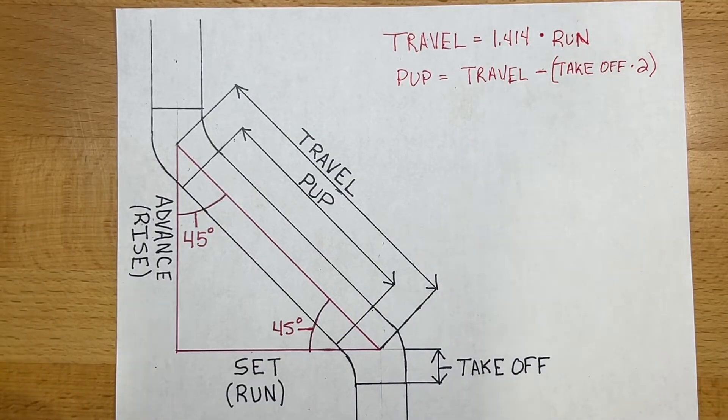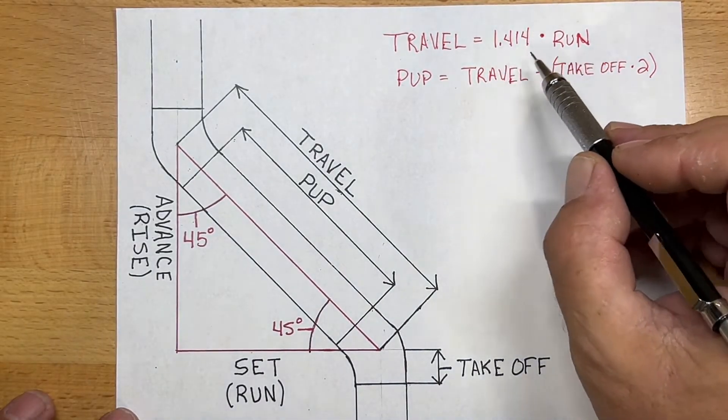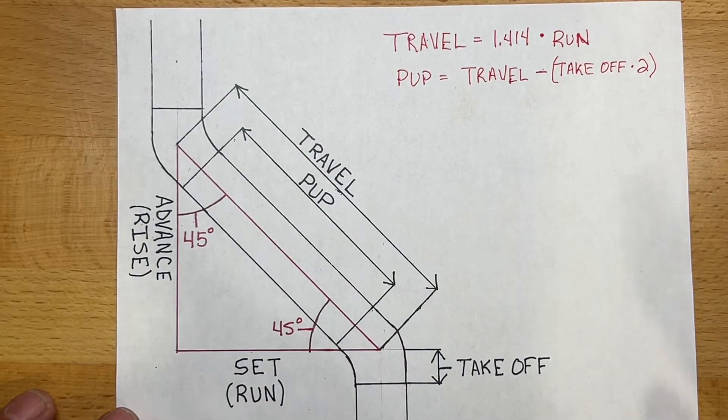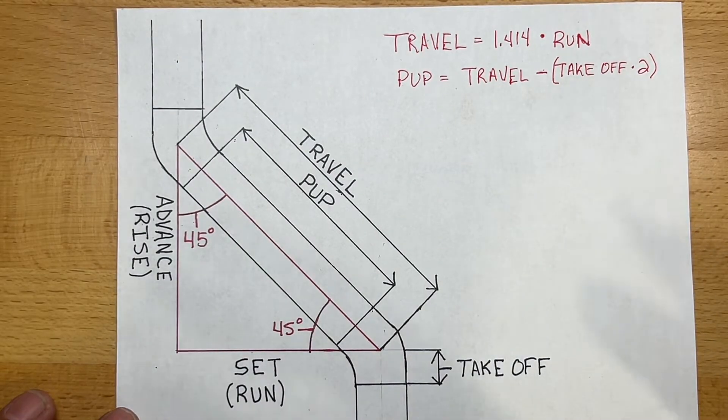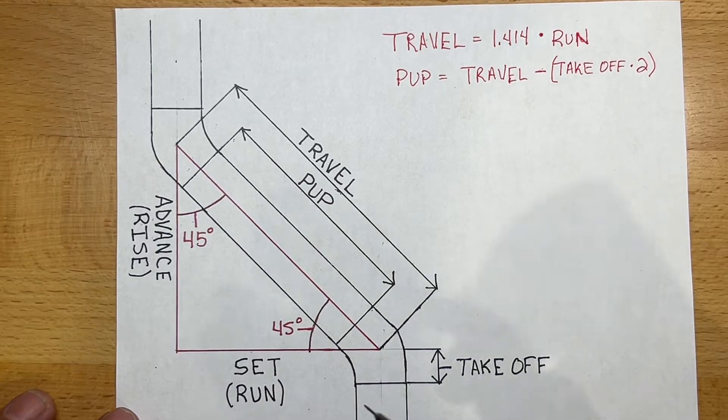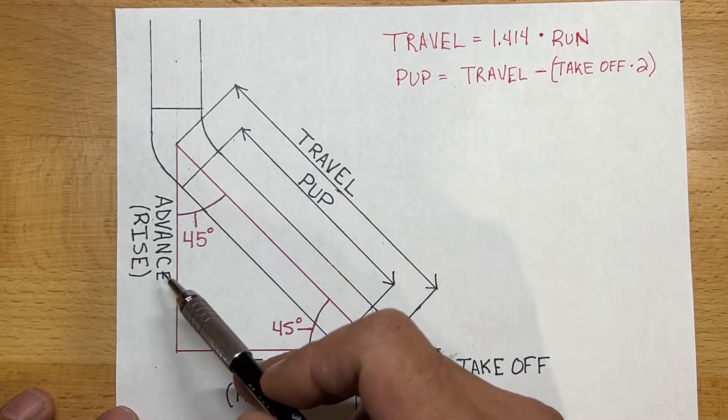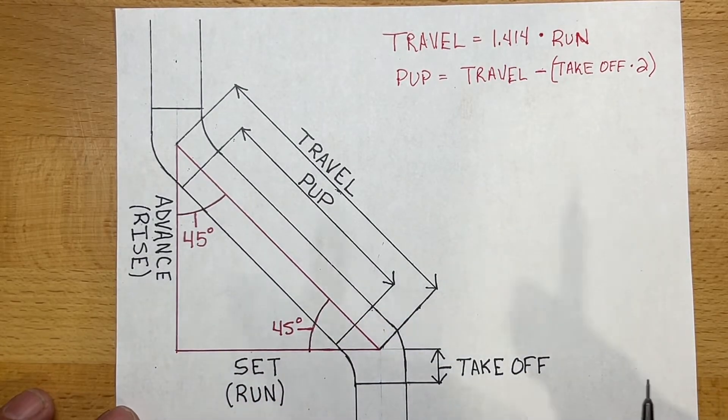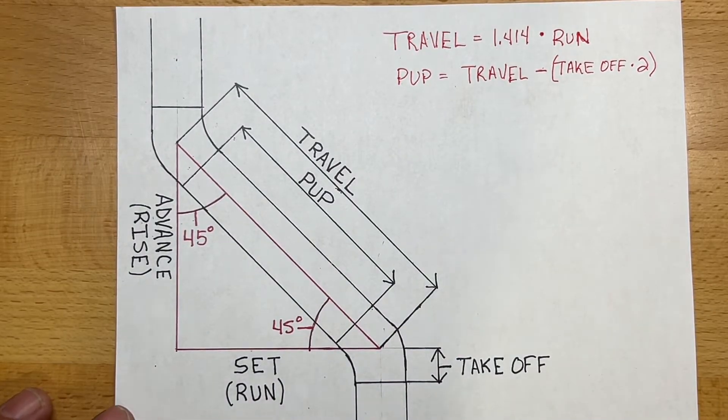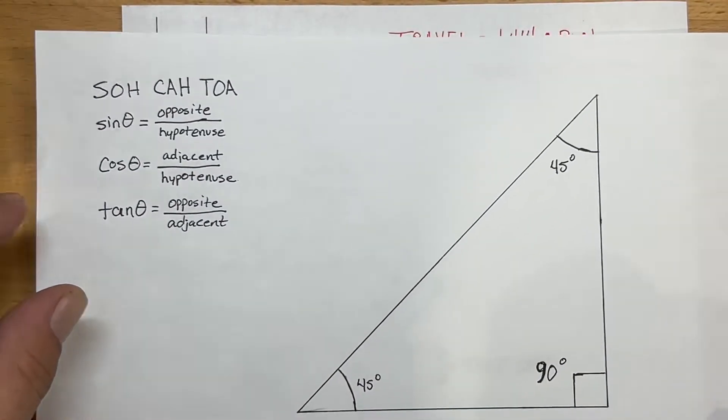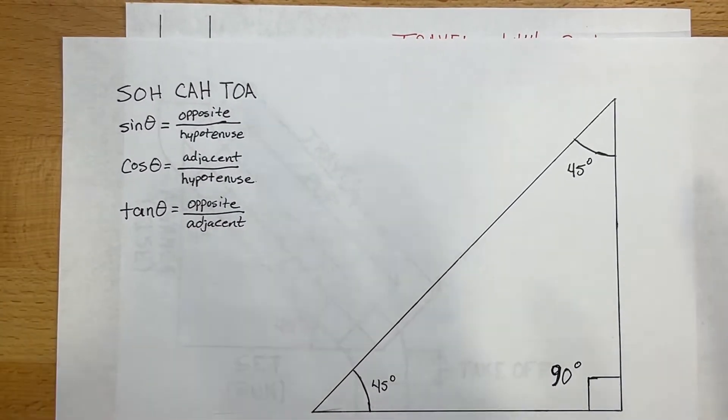Now with 45-degree offsets, there are some constants that we're going to go over as well. But it's important to know how these are derived. If you've worked with pipe, you probably know the number 1.414. And what that is, is a ratio of the length of the set. In the case of a 45, the length of the set and the advance because they're both the same in a 45-degree triangle in relationship to the travel. And it's a special right triangle or the 45-degree right triangle.